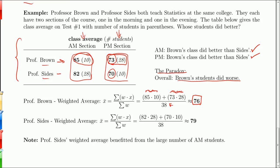Now, if you look at Professor Sides, you're going to get 82 times 28, plus 70 times 10, divided by the total weights, which is the total number of students of 38, you get 79 overall. So notice, in the morning, up here, Brown did better. In the afternoon, Brown did better. But when you look down here, Brown does worse. That seems contradictory. It seems like a paradox. It's not totally a paradox.